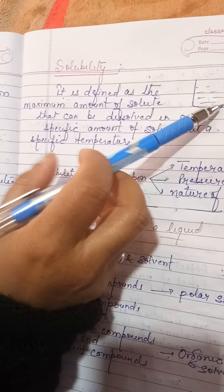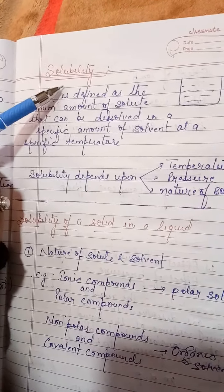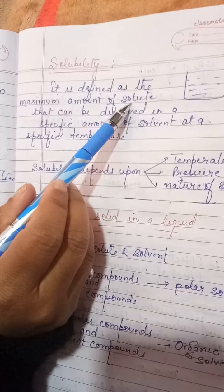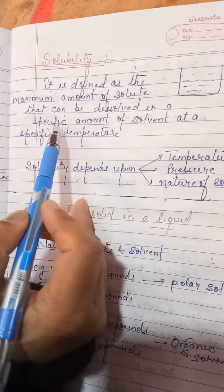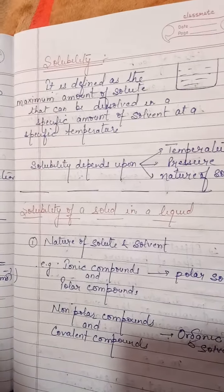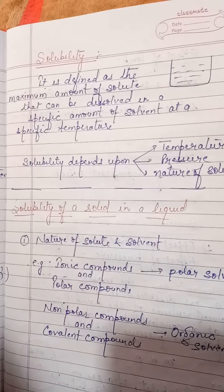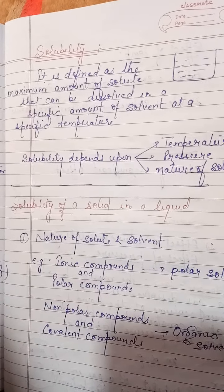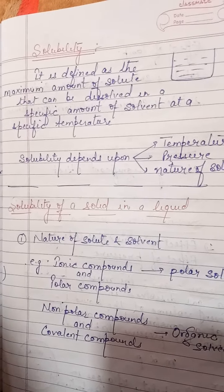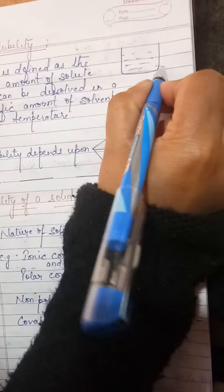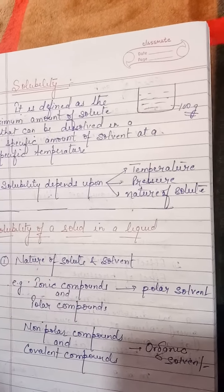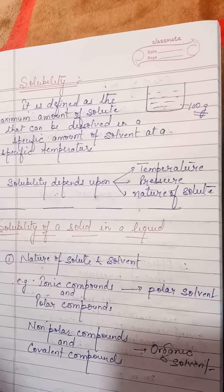What is solubility? It is defined as the maximum amount of solute that can be dissolved in a specific amount of solvent at a specific temperature. In a particular solvent, the maximum amount of solute can be dissolved. Generally, solubility is expressed per 100g or 100ml of solvent.